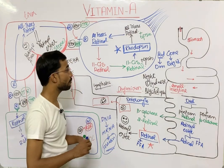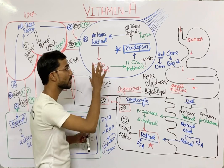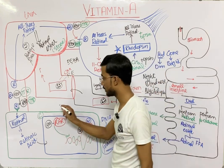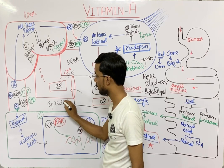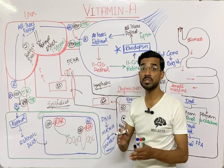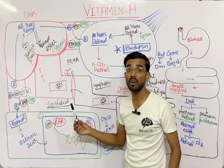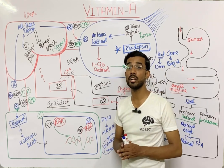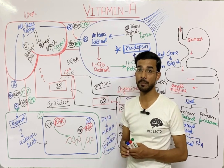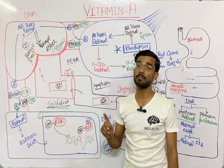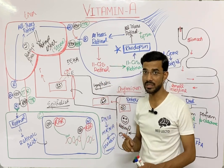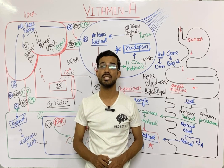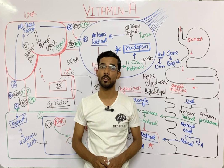In summary, Vitamin A is important in three main functions: the visual cycle, maintenance of epithelial cells (deficiency causes keratinization and dryness), and reproduction. Note that retinoic acid is not important in the visual and reproductive cycles — those require retinol and retinal. This concludes our discussion of absorption, distribution, and utilization of Vitamin A. Thank you.